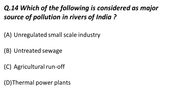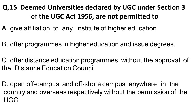The next question: which of the following is considered a major source of pollution in rivers of India? The options are: A) unregulated small-scale industry, B) untreated sewage, C) agricultural runoff, D) thermal power plant. The correct answer is untreated sewage — it is the major source of pollution in rivers of India.